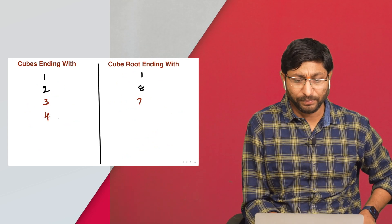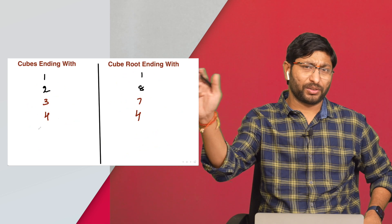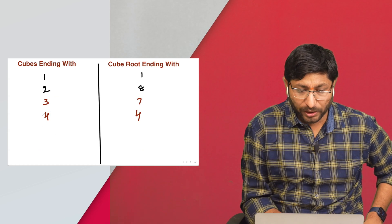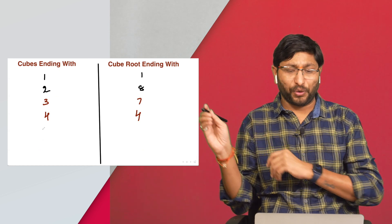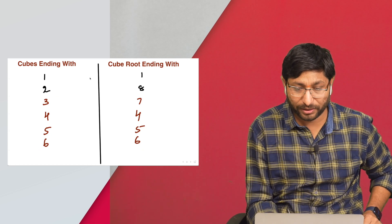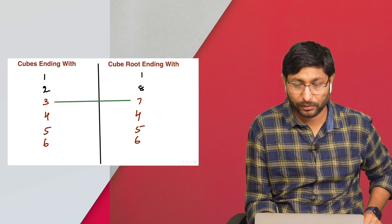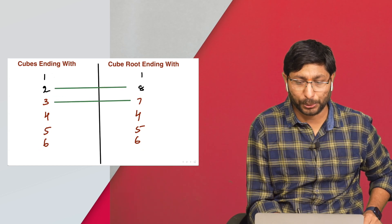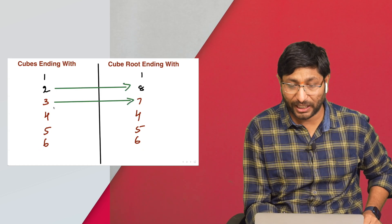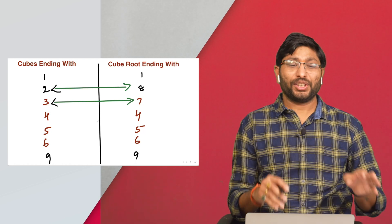For 4³=64, cube root of 64 is 4. You can cross-check with 14³ as well. The pattern: if the cube ends with 4, the cube root also ends with 4. If the cube ends with 5, the root ends with 5. If it ends with 6, root ends with 6. For 7, root ends with 3. For 8, root ends with 2. For 9, root ends with 9.